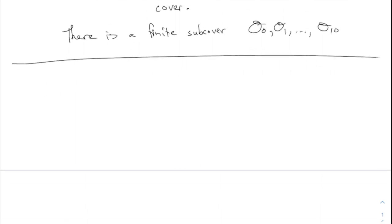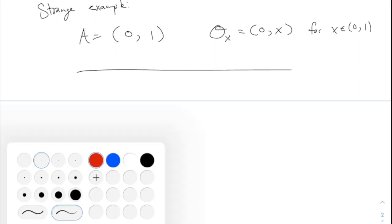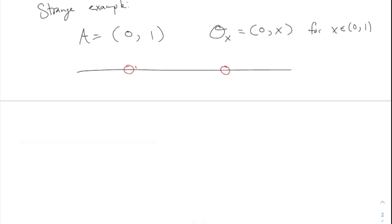Here's another example — I will say this is a strange example. Let A be just the open interval 0 to 1. It can be covered by sets O-X, where O-X is the open interval from 0 to X, for X in the open interval (0,1). This means we have uncountably many sets O-X — you have O one-half, O two-thirds, and for every X in the open interval, including irrational values.